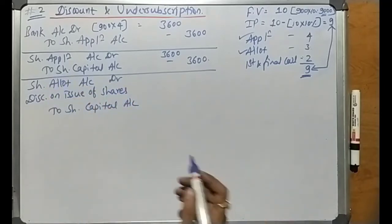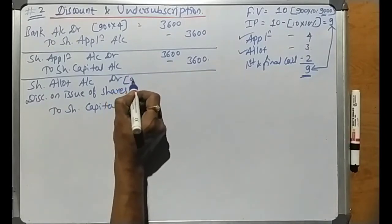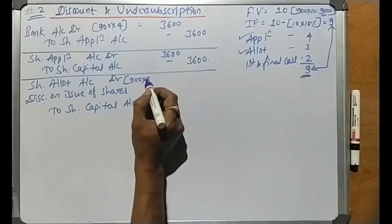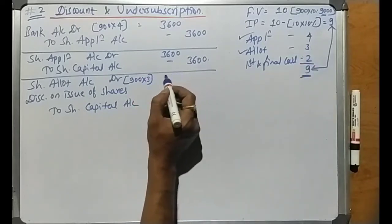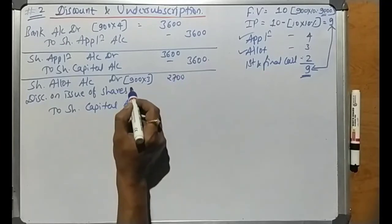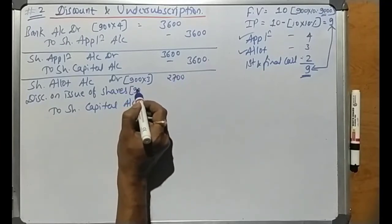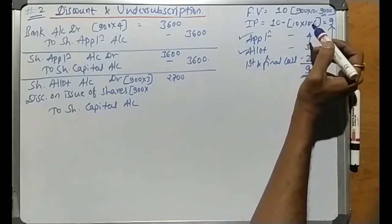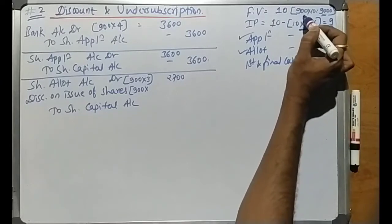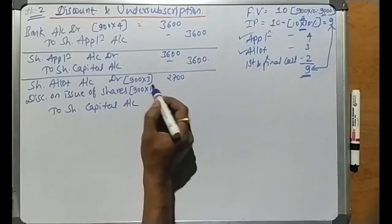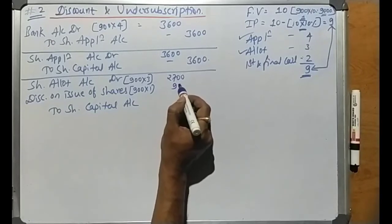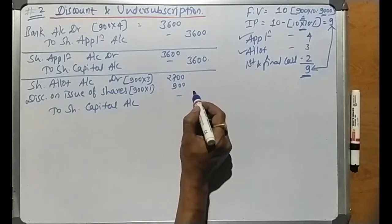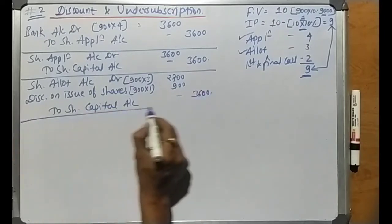Applications received are 900 shares. Allotment amount is rupees 3 per share, so 900 into 3 equals rupees 2,700. The discount is rupee 1 per share, so 900 into 1 equals rupees 900. Therefore, Share Allotment Account is debited with rupees 2,700, Discount on Issue is debited with rupees 900, and Share Capital Account is credited with rupees 2,700 plus 900, which equals rupees 3,600.